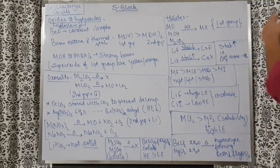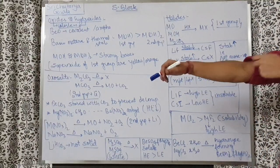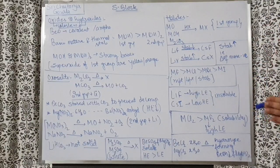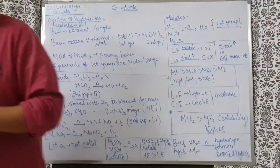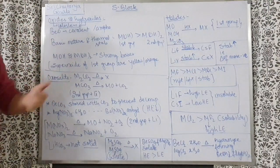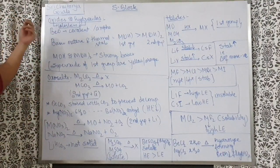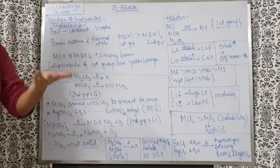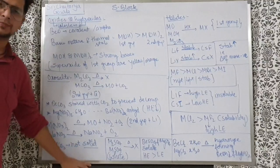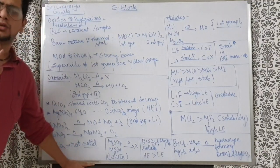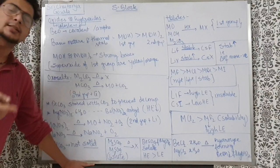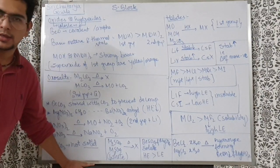Here are the short notes regarding the oxides, hydroxides, halides, and oxo-salts of both the first and second group together. Oxides and hydroxides of both groups are colorless, because the cations of Group 1 and Group 2 are colorless. They both have octets, and whenever there is octet formation, colors are usually not shown. So, first and second group cations are colorless, and as a result, their hydroxides and oxides are also colorless.